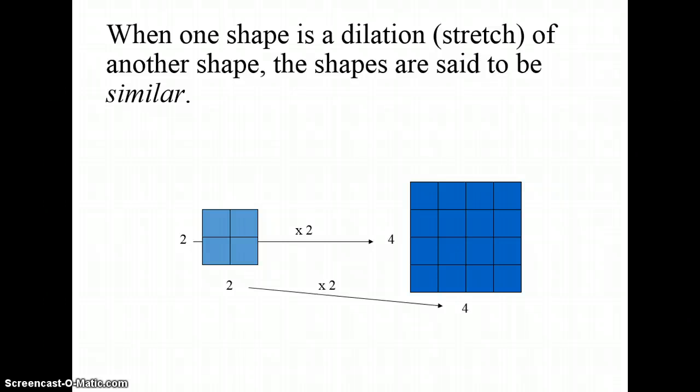When one shape is a dilation or stretch of another shape, the shapes are said to be similar. Basically, it's same shape, different sizes. To be similar, the lengths of all of the sides of one figure are going to be proportional to the lengths of all the sides of a second figure.